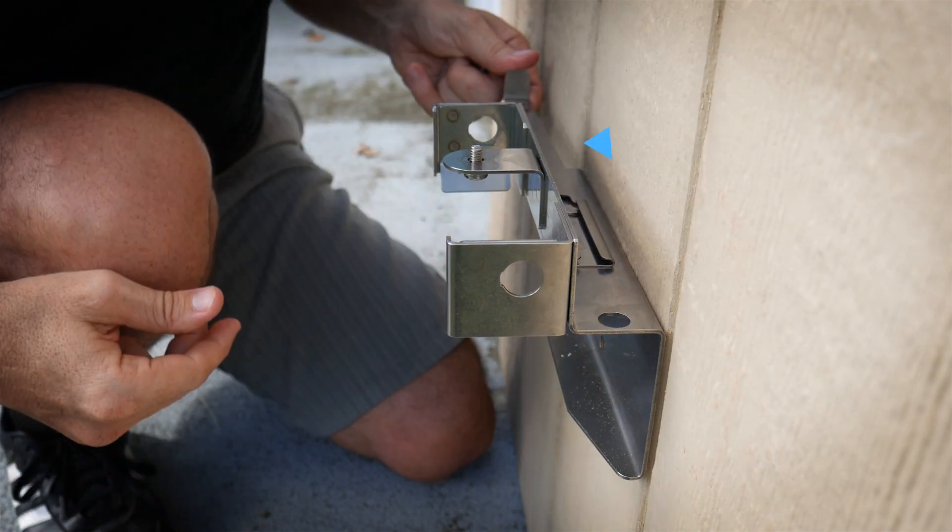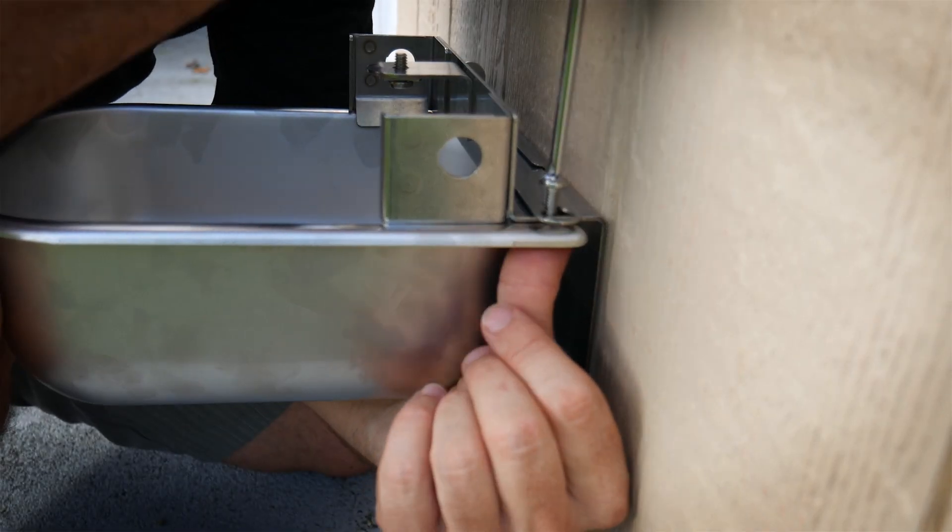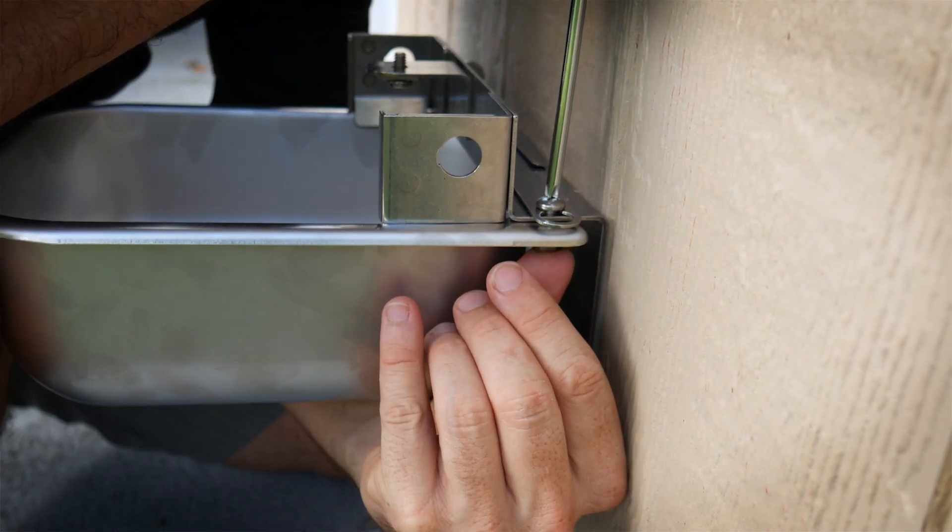Slide the latch bar into the retainer on the wall bracket. Tighten both screws with the heads up.